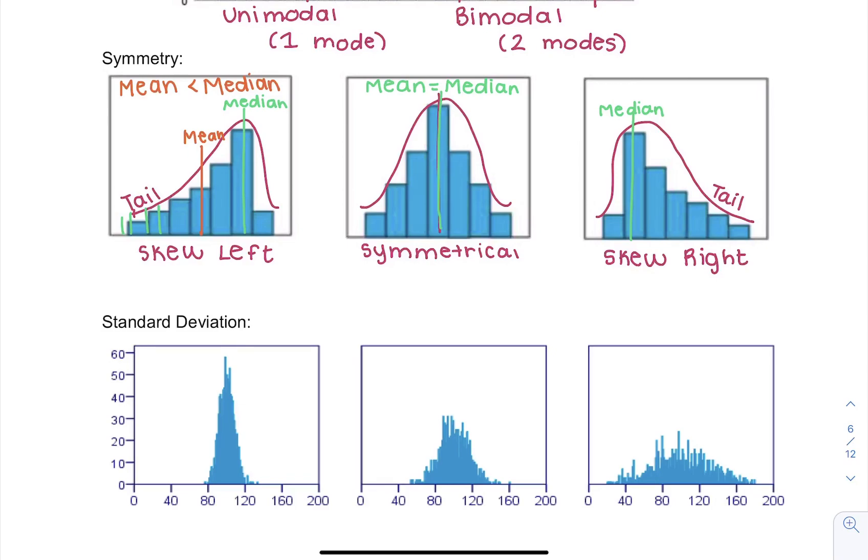Now for skewed right, the same thing happens. So maybe this is a really, really hard test where most kids got about 60 on them. However, there's a few kids who did really, really well in the tail.